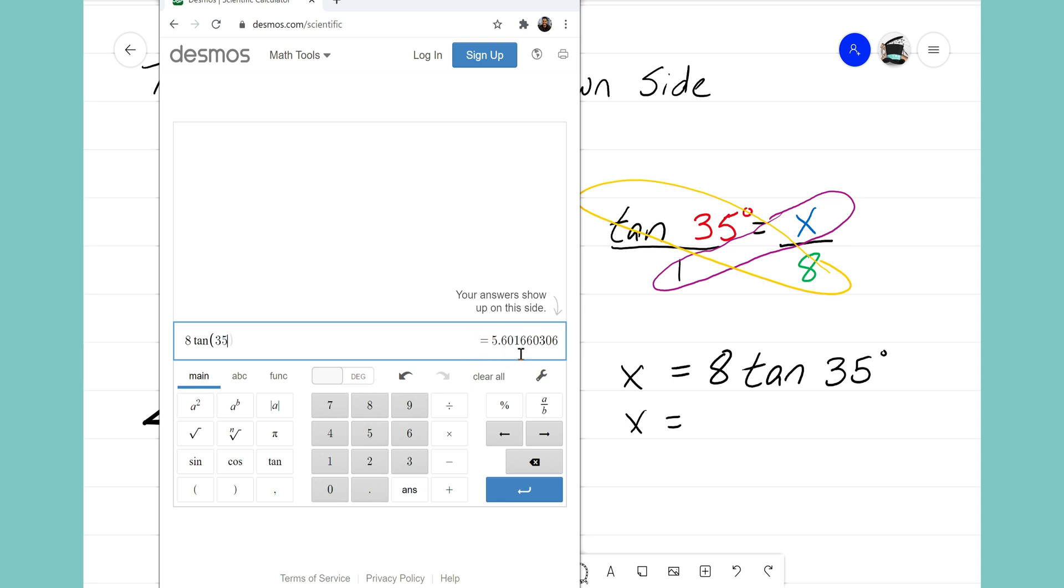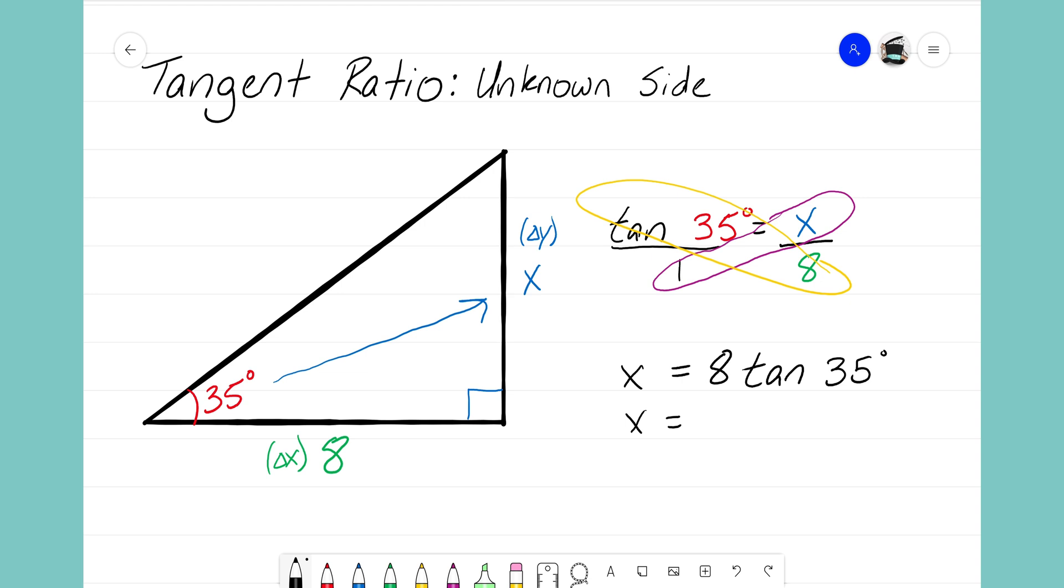And I see that my answer is coming up as 5.60, so I think I'll round that to 5.602. That is the length of this unknown side. By using the tangent ratio now, if we know one of the sides and one of the angles, we're actually able to figure out either delta y or delta x just by using this tangent ratio.